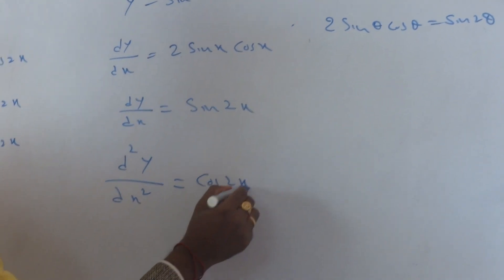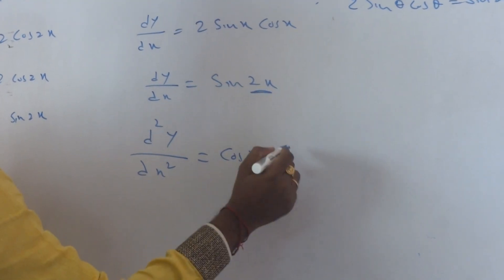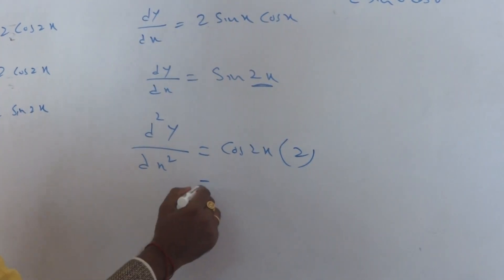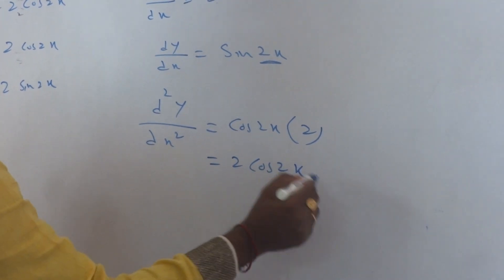The derivative of sin 2x is cos 2x times the derivative of 2x, which is 2. By the chain rule, the final answer is 2 cos 2x, which is the third option.